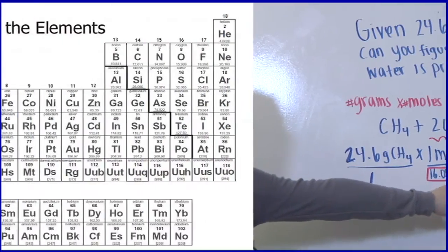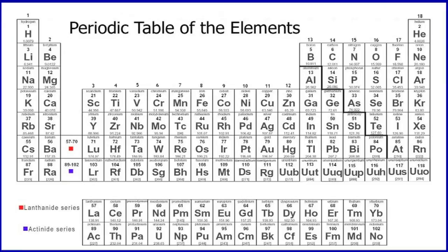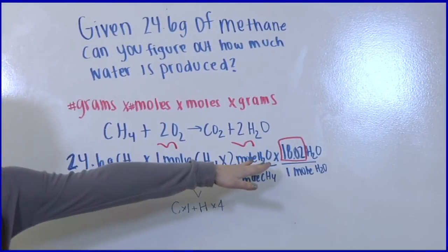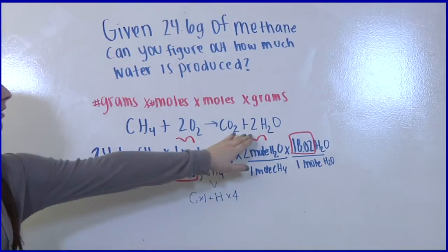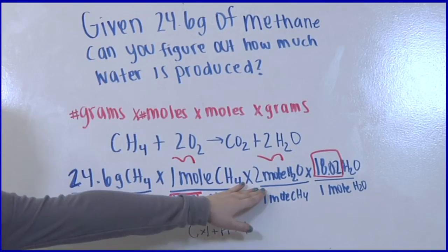Next we want to bridge the gap. We want to go from methane over to water. So we use a mole conversion to do so. We got the 2 from in front of H2O and we put it over 1.